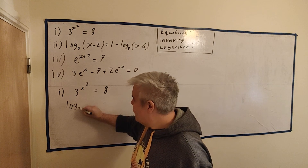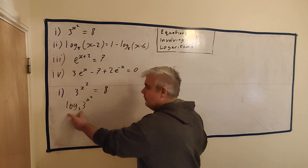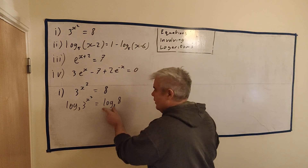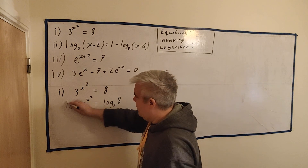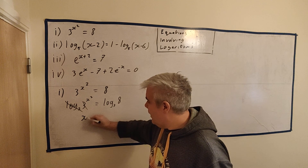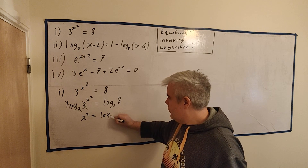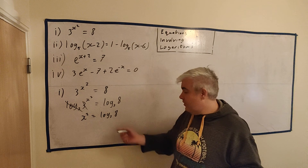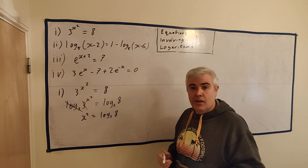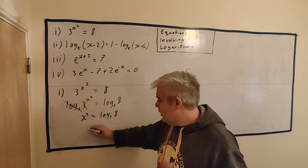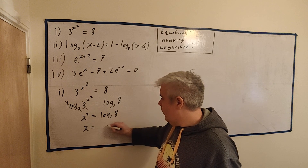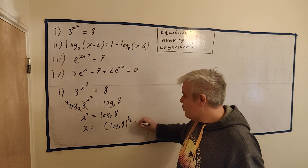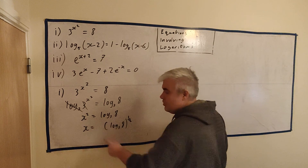So how do we get rid of this 3? Log to the base 3 destroys the base 3. We apply log base 3 to both sides — fair to both sides. This side destroys the base 3 for us, and we're left with x squared equals log base 3 of 8. Do not use a calculator yet — this is an exactly correct answer. Then x equals the square root of log base 3 of 8, i.e., to the power of a half.